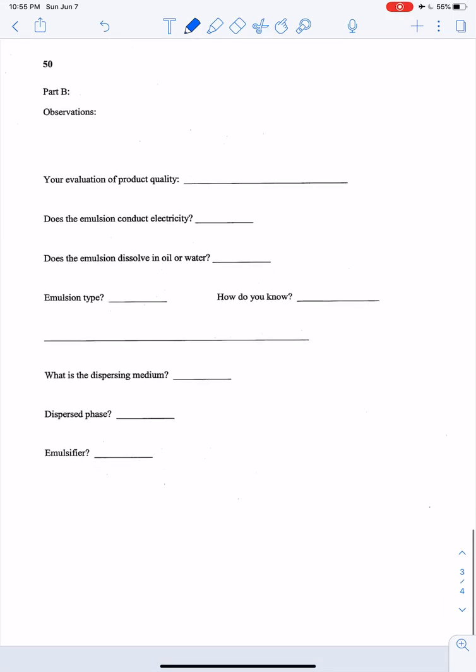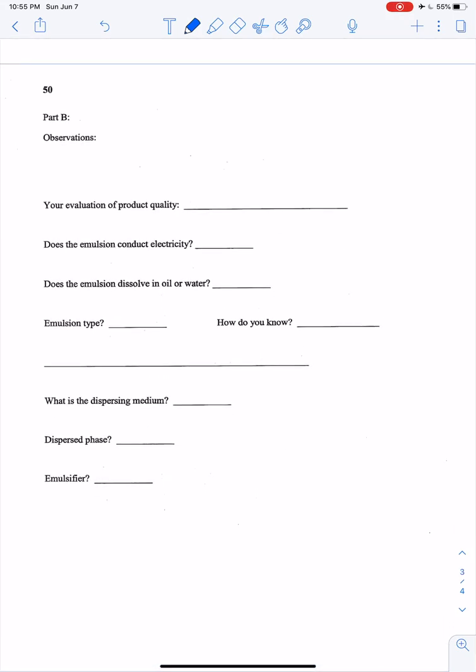Now on the next page it asks for your observations, and that's just what that is, just write down some observations of what you see. Then your evaluation of product quality, that's an opinion question. Usually if you're doing this in the lab you can feel it and smell it and it's kind of easier to write down an answer, but you just got to look at the video with this. Now it says does the emulsion conduct electricity, so that's just yes or no. Then it says does the emulsion dissolve in oil or water, so that again is gonna be answered once you watch the video.